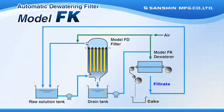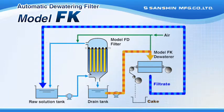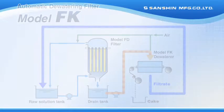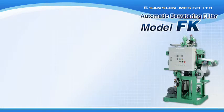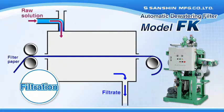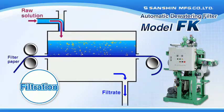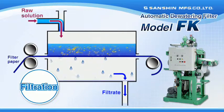Let's now take a look at the filtration, dewatering, and discharge processes of the automatic dewatering filter model FK. Belt-shaped filter paper is automatically fed to the filter media chamber, and pressure filtration involving the injection of raw solution from the top of the chamber is performed.